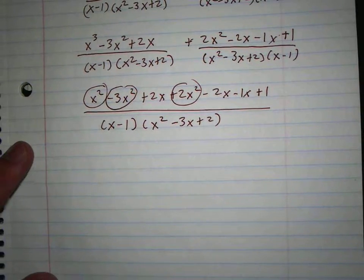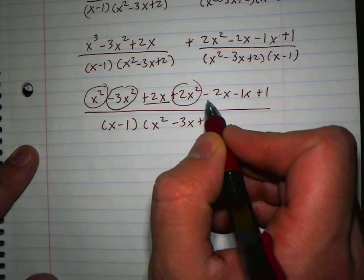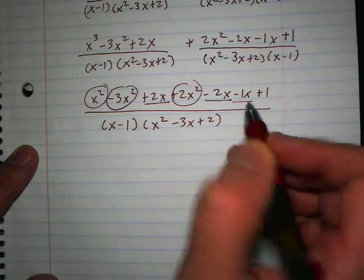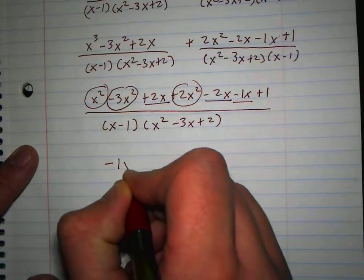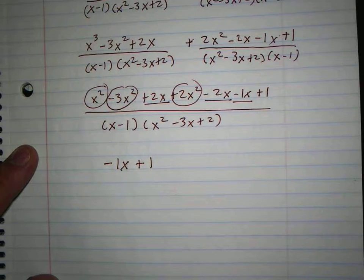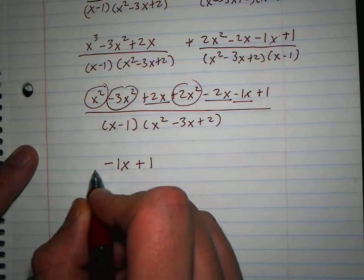Now let's look at my x's. I have 2x minus 2x, that'd be 0, that'd be negative 1x, that'd be plus 1. So all that reduced to negative 1x plus 1.